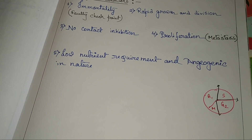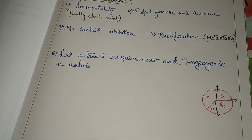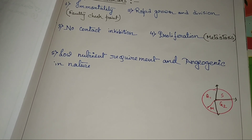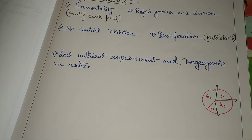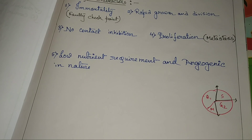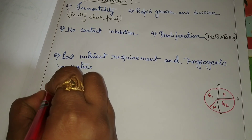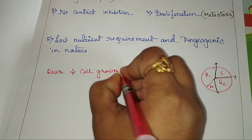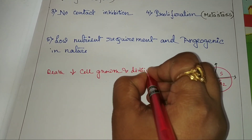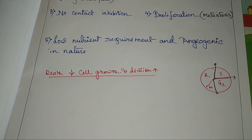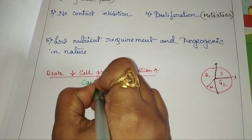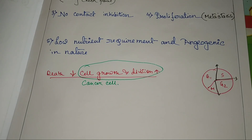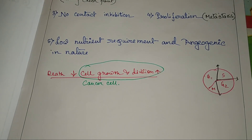One of the major characteristics is rapid growth and division. In my previous class, I told you that as a cell grows older, cell growth and division become higher, and cell death becomes lower in the case of a cancerous cell. That means death is low, and cell growth and division become higher. This is a characteristic of the cancerous cell. Now, let's discuss cell growth and division — how this rapid growth and division occurs.